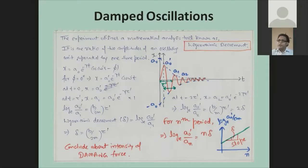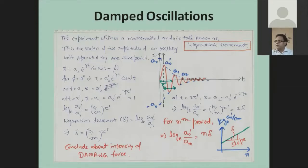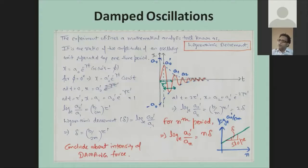The way these amplitudes decay with respect to time reflects a constant nature of the damping. This constant nature is interpreted and analyzed in the form of the logarithmic decrement. Using the exact solution from the equation of motion, we see that the dying amplitudes are a function of the damping characteristics of the medium, b/2m. The constant ratio of the logarithm of successive amplitudes is the logarithmic decrement, which allows us to easily measure the damping force in the lab.